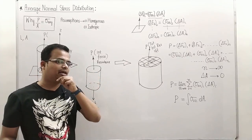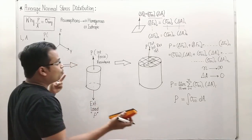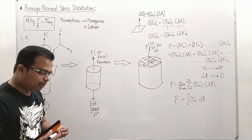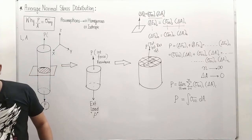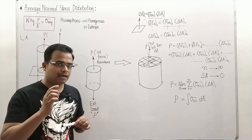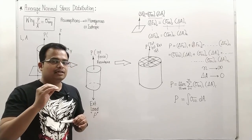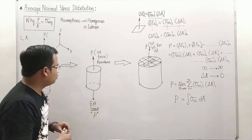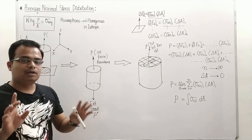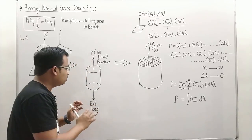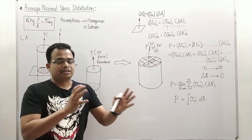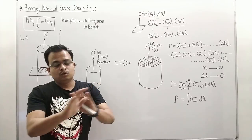One more thing to keep in mind: in mechanics of solids, every load we apply is below the proportional limit, which means whenever you apply a load, the resistance offered at any cross-section equals the external applied load. This is only true as long as the load is below the proportional limit — as long as there is a linear relationship between stress and strain, i.e., Hooke's law is followed.